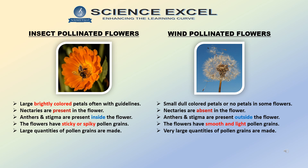Insect pollinated flowers have anthers and stigma inside the flower — the insect has to brush past them to reach the nectar — whereas in a wind pollinated flower, anthers and stigma dangle outside the flower where they catch the wind to propagate. Insect pollinated flowers have sticky or spiky pollen grains which stick to the body of insects, whereas the pollen grains in wind pollinated flowers are smooth and light, which can be blown in the wind. Insect pollinated flowers have large quantities of pollen grains to overcome losses since some will be eaten or delivered to the wrong kind of flower, and in wind pollinated flowers very large quantities of pollen grains are made because most will be blown away and lost.